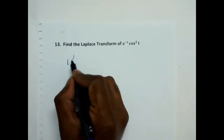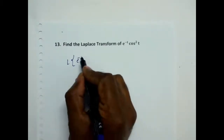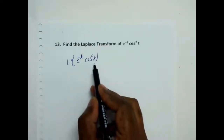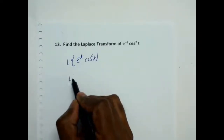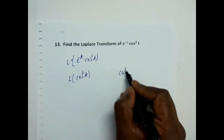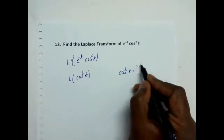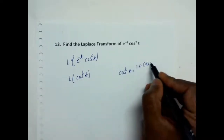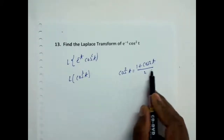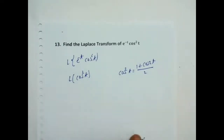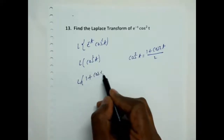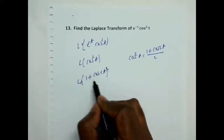Laplace transform of e power minus c, cos squared c. First I am doing only cos squared c. That is Laplace of cos squared c. Cos squared c we can write using the identity: cos squared c equals 1 plus cos 2 theta, divided by 2. So Laplace of cos squared c equals Laplace of 1 plus cos 2 theta, divided by 2.